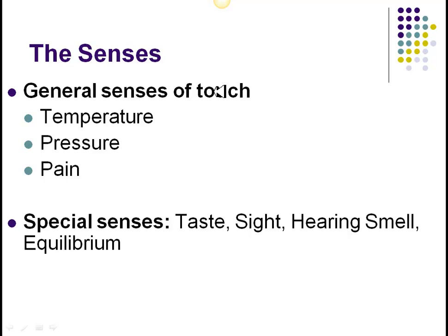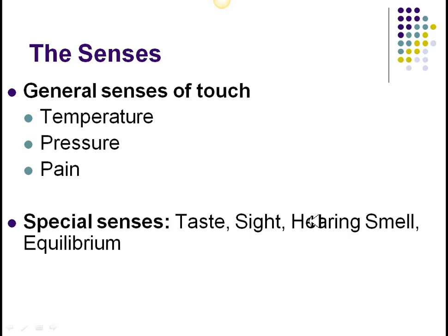The sense of touch gets pretty complicated. You've got pressure receptors, touch receptors, pain, nerve endings, and sensitivities to temperature. All these would be located in the skin and we'll be talking more about it in the integumentary system lectures. Our second lecture will cover smell and taste, the third lecture will cover hearing and equilibrium, and the fourth lecture will cover vision.